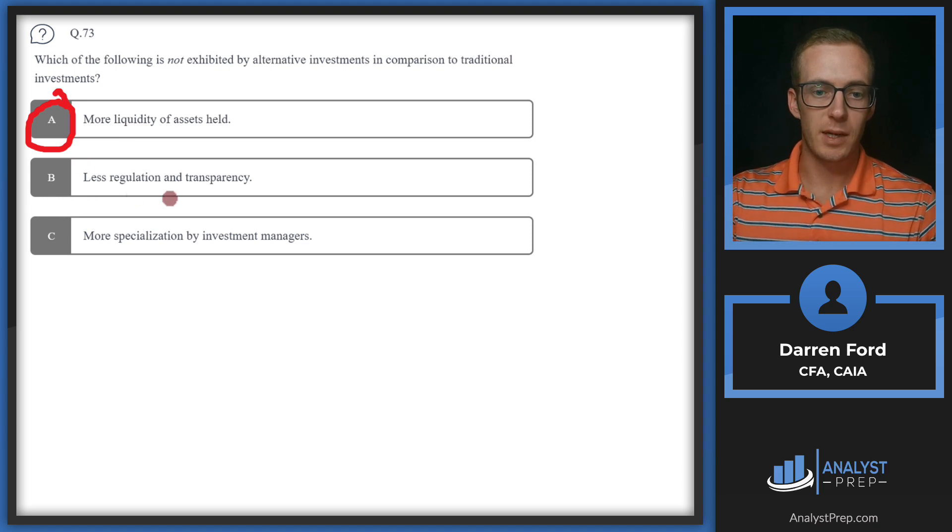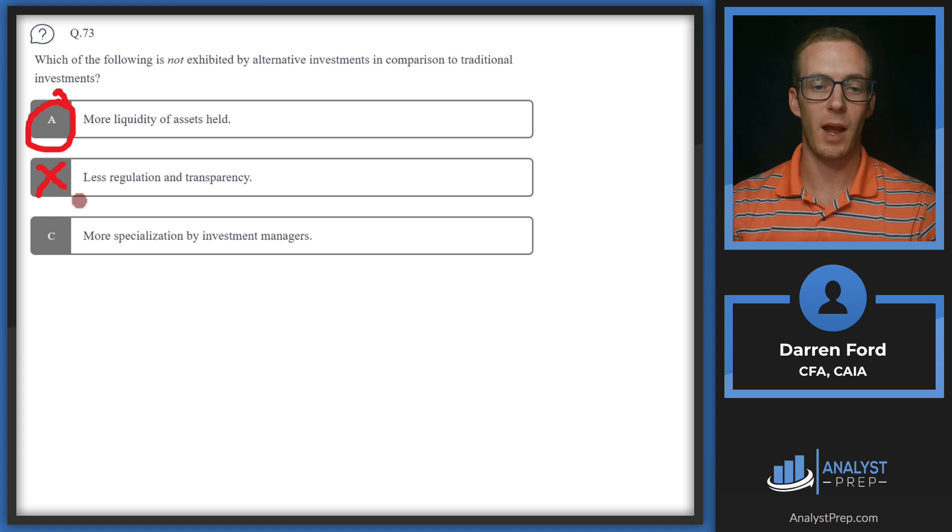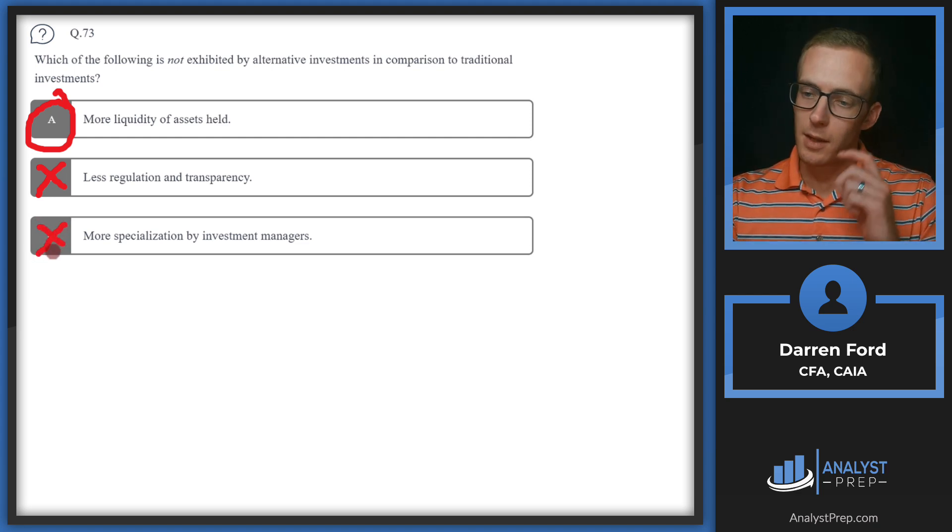But let's make sure we can rule out B and C. B: Less regulation and transparency. They will have less regulation and transparency, so we can rule that out. This is mainly because of the type of investor in alternative investments - they're generally people of higher net worth or they're institutions, so the SEC assumes some level of sophistication and ability to absorb losses from these more opaque strategies.